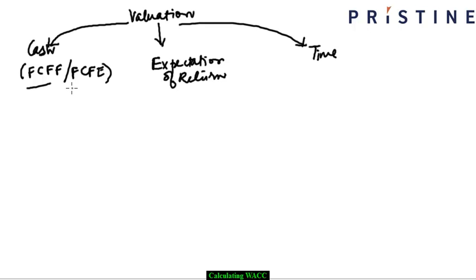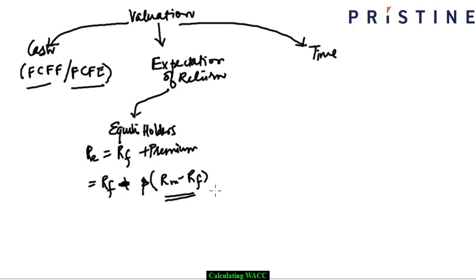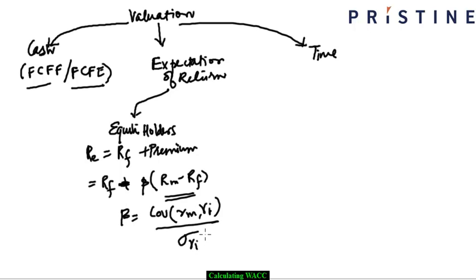We have already spoken about how to calculate the free cash flow to the firm and the free cash flow to the equity. Now we will speak about the expectation of return. In the last tutorial we spoke about the expectation of return from the equity holders. The equity holders expect that apart from the risk-free rate they also get a premium for the additional risk they are taking: RF plus beta multiplied by RM minus RF. Beta is essentially the covariance of RM and RI divided by the variance in RI.